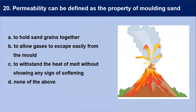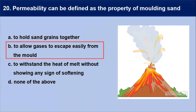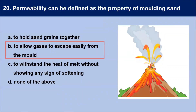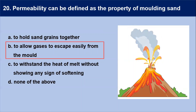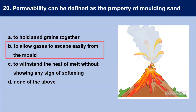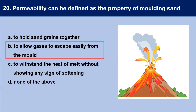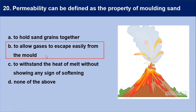Next question: permeability can be defined as the property of molding sand — permeability is the property of molding sand that allows gases to escape easily from the mold, so that the casting will not generate blow holes. Our answer is — to allow the gases to escape easily from the mold.